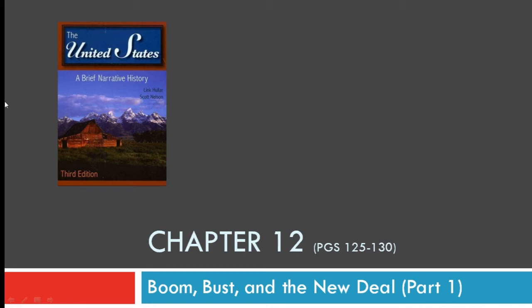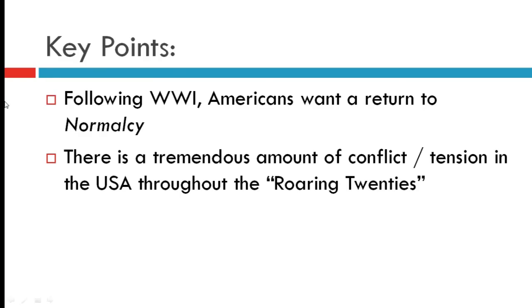Hello and welcome. This will cover chapter 12 of our textbook, 'The United States: A Brief History' — specifically the first half of chapter 12, pages 125 to 130, on boom and bust, but not yet the New Deal. Two key points: first, following World War I, Americans want a return to normalcy — we'll define and evaluate that term. Second, there's a tremendous amount of conflict and tension throughout what we call the Roaring 20s.